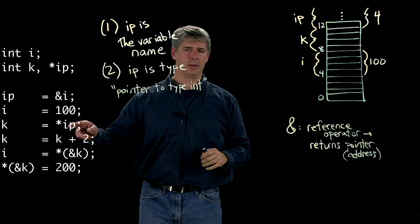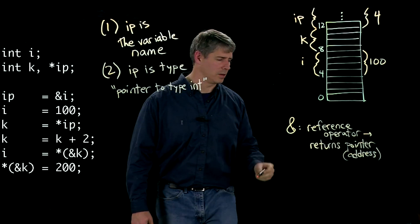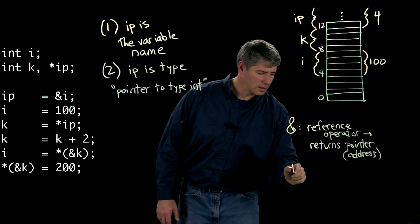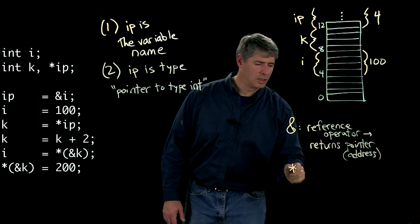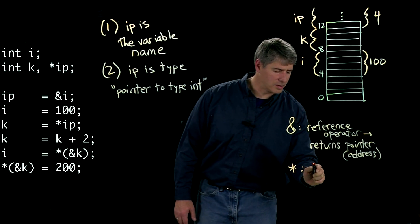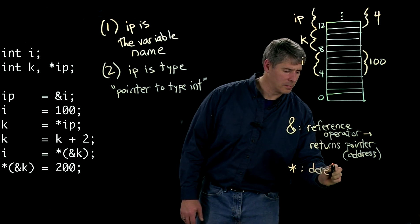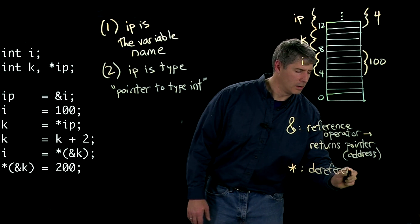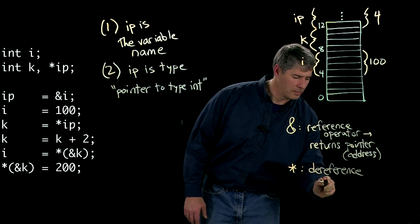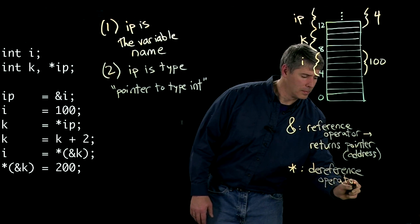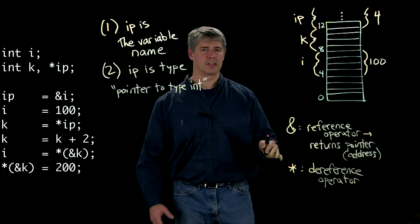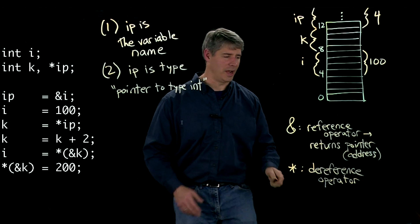k is equal to star ip. Okay. So star is another interesting character. It's actually dual to the reference operator. It's called the dereference operator. And what it does is it returns the contents at a particular address.